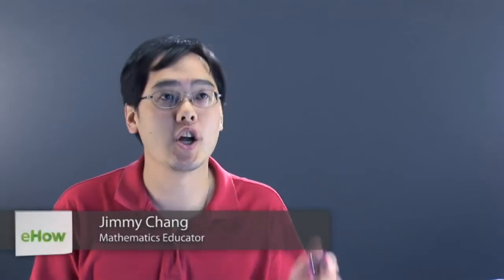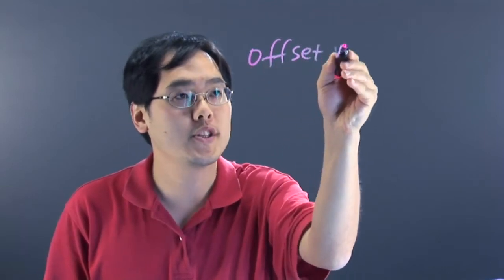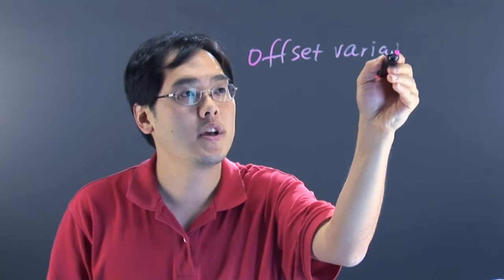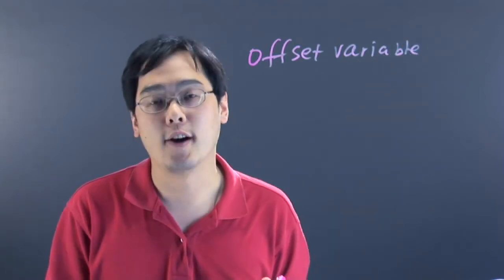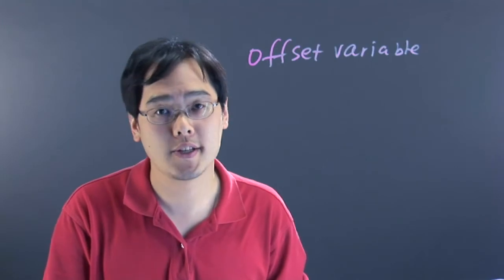Now the offset is known as an offset variable. This is a variable that's used in the Poisson regression model. If you've never worked with the Poisson regression model, this concept may not mean a whole lot to you.